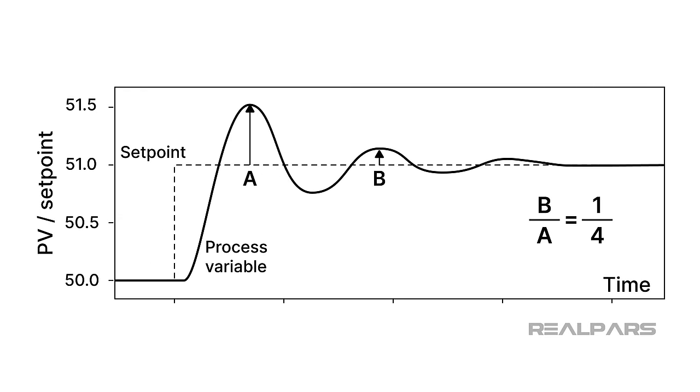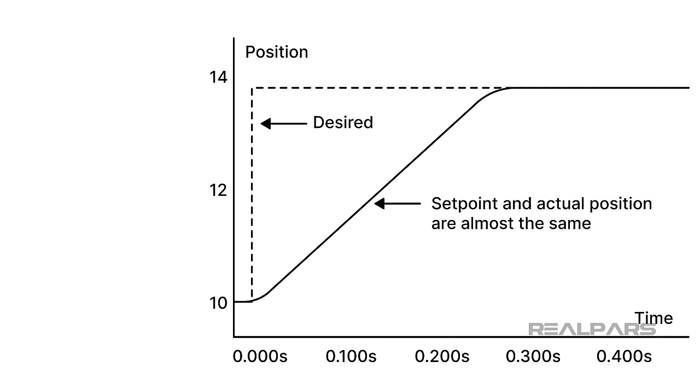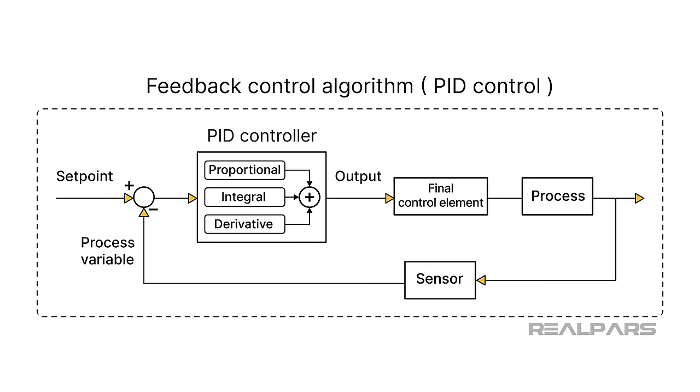However, that quarter wave type of response just won't work in a sawmill motion control system where the speed and position of an electro-hydraulic valve are critical. The valve position cannot be allowed to swing wildly around the setpoint. Controller tuning involves a procedure where each component of the PID algorithm is adjusted to produce the desired response to setpoint changes or disturbances.